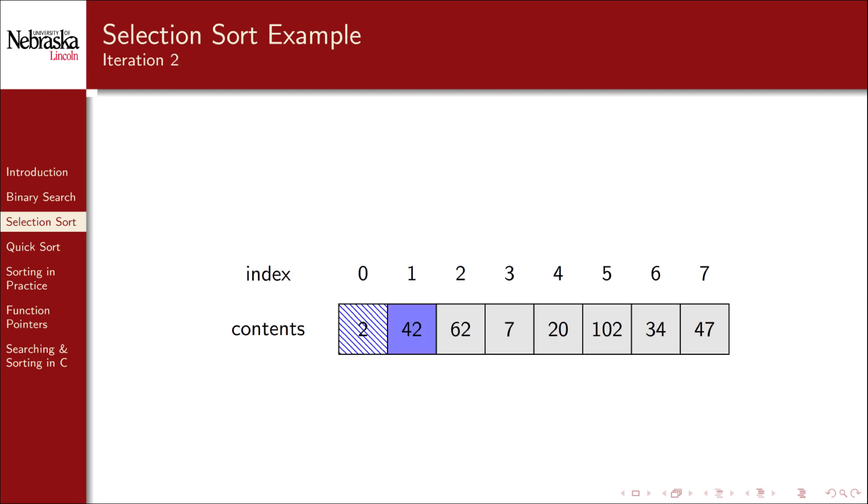We start with the unsorted area. 42 will be assumed to be our smallest element, and we compare it with other elements until we find something that's smaller. We compare it with the rest of the array and find that 7 is the smallest element of the remaining elements, so we go ahead and swap it with 42.